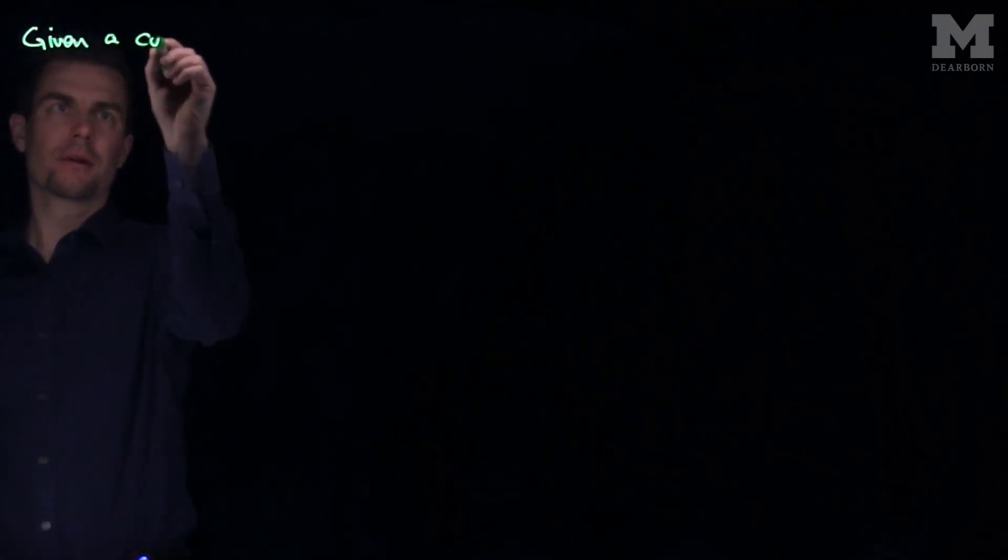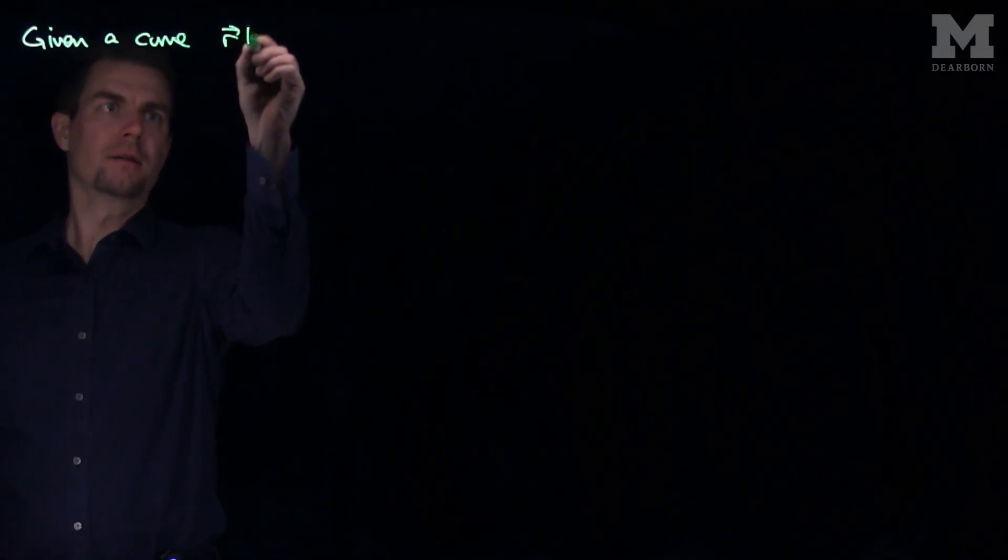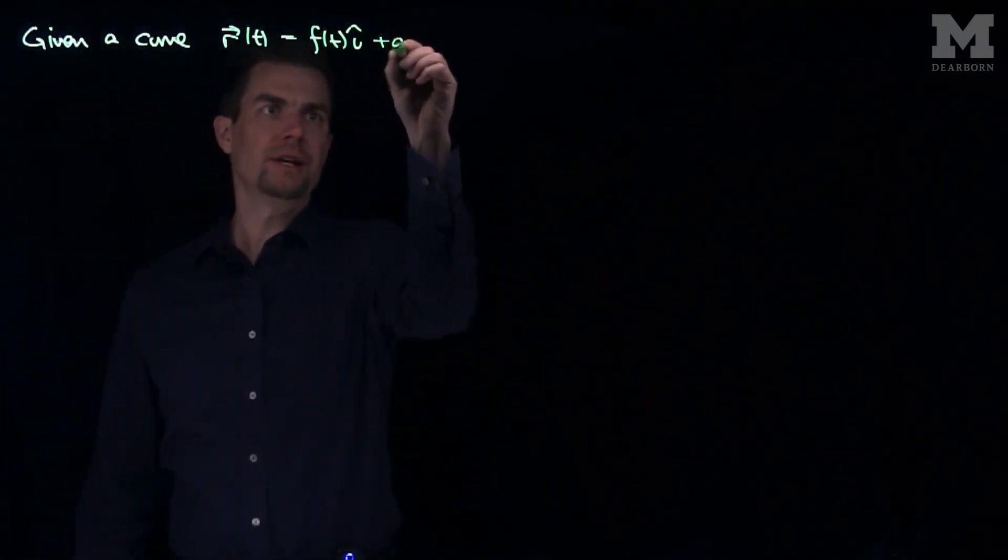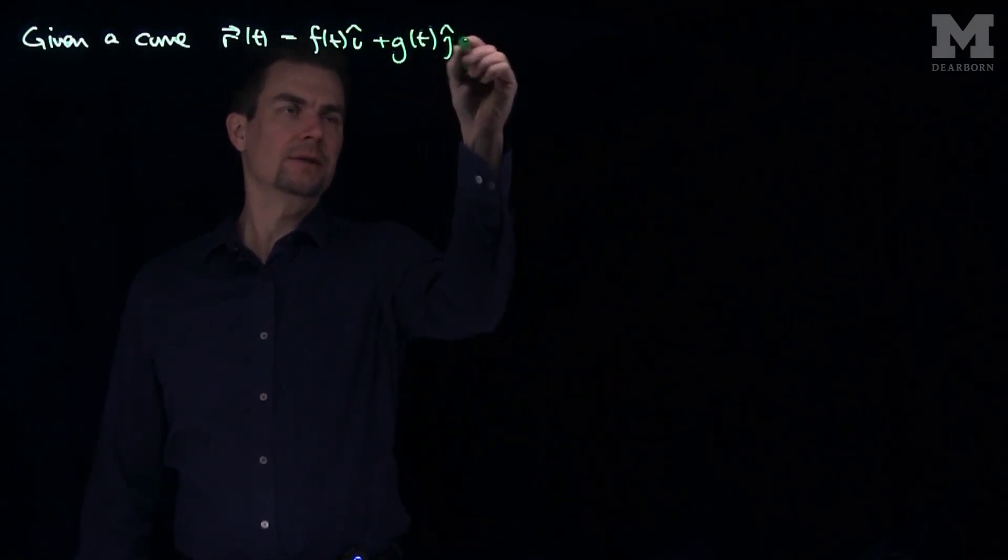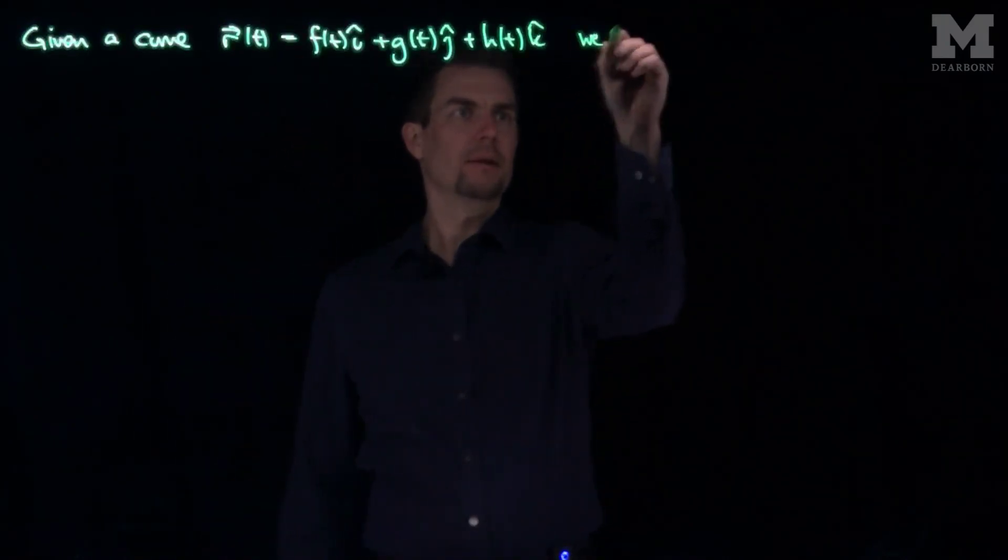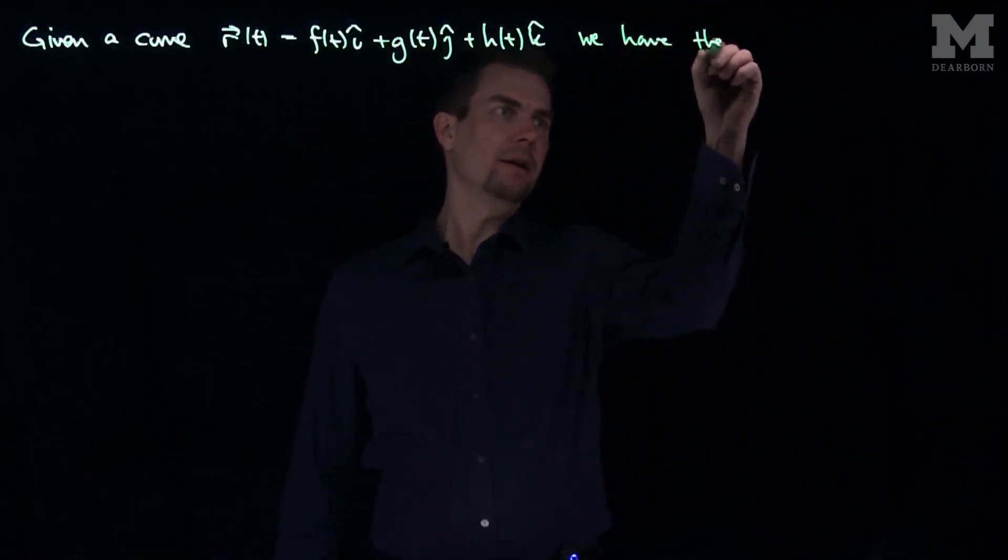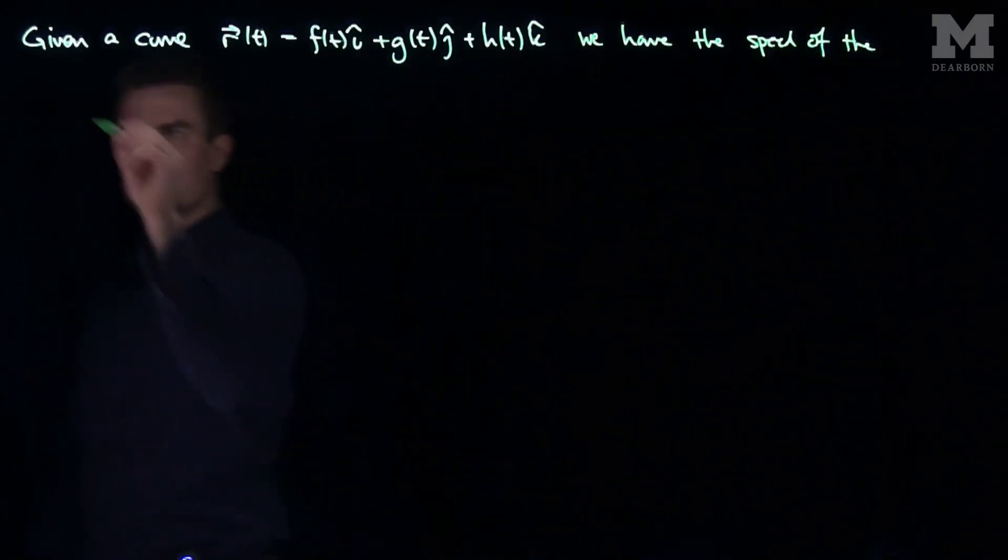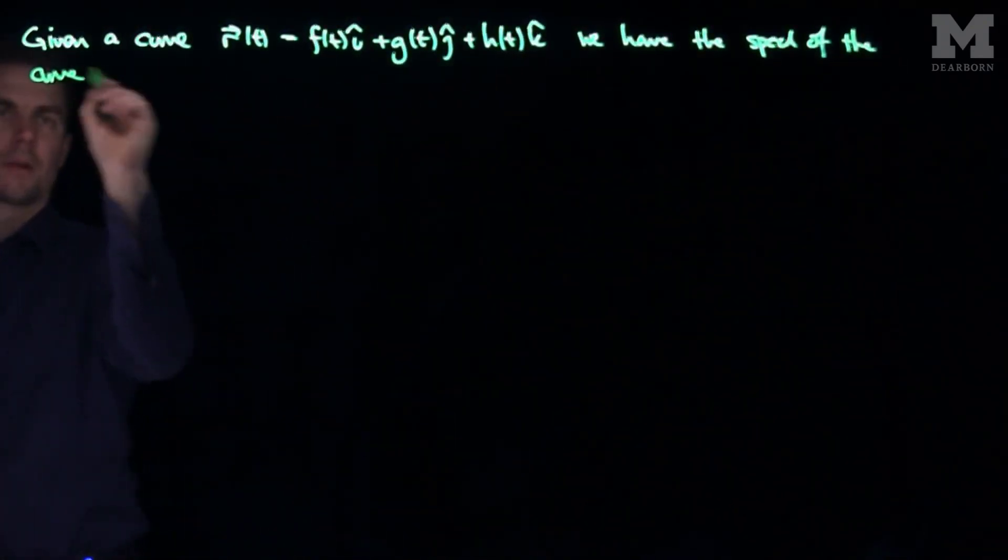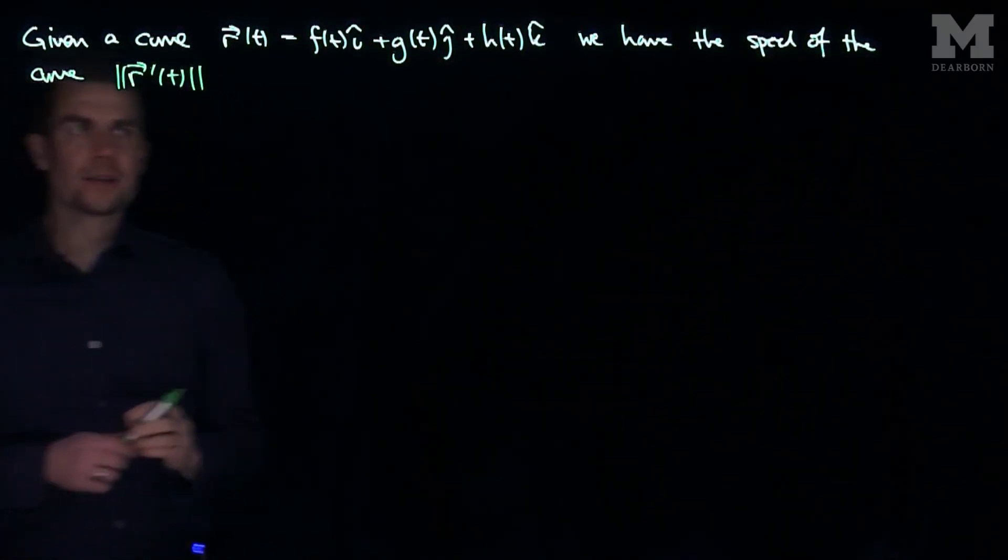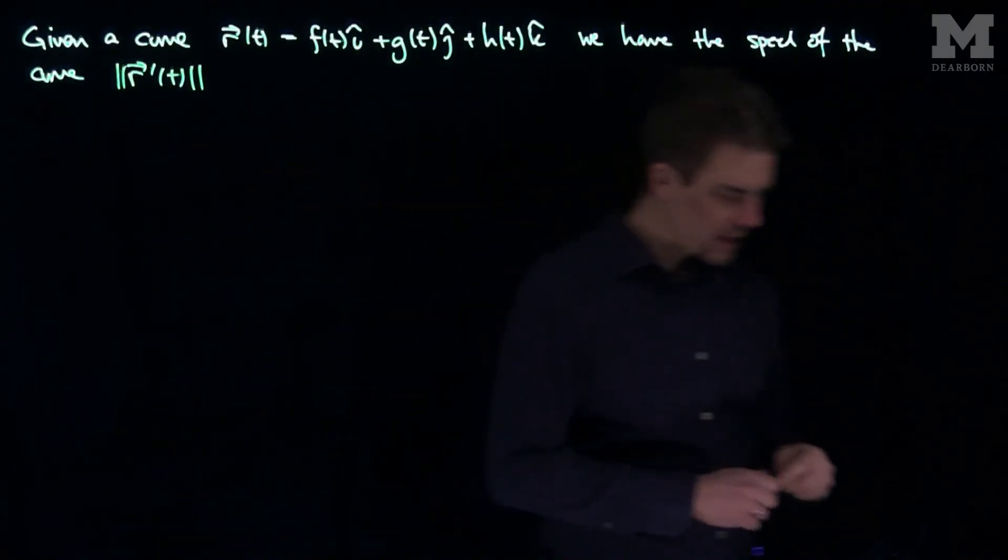If we're given a curve R(t), which is F(t) i-hat plus G(t) j-hat plus H(t) k-hat, we can define the speed of the curve as the length of R prime of t.